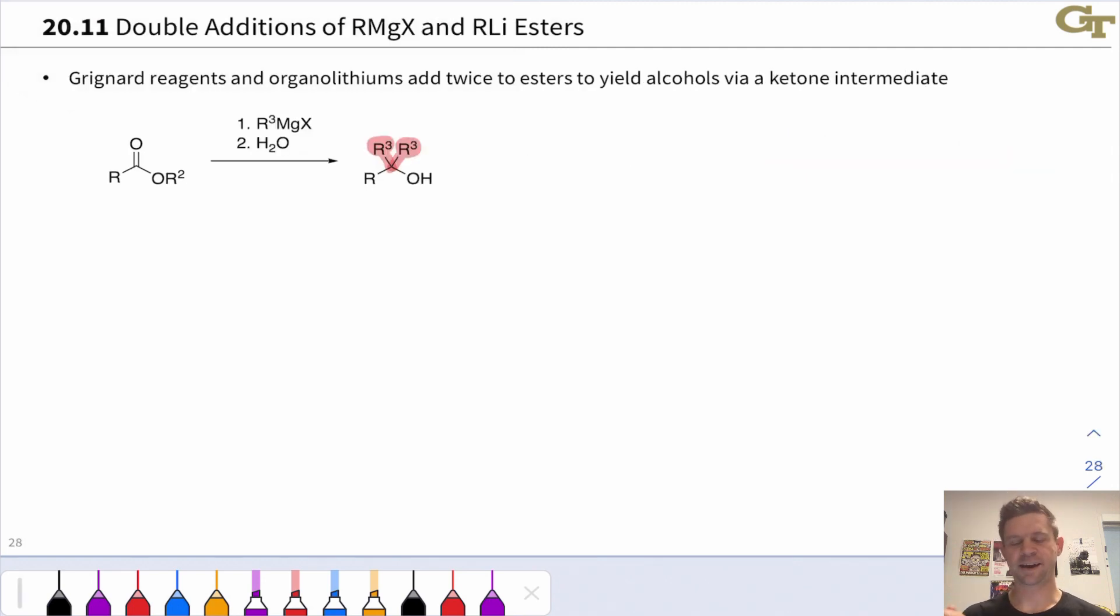Like acyl chlorides and anhydrides, esters react with Grignard reagents and organolithium reagents twice. Two equivalents of the organometallic react to yield alcohols, tertiary alcohols containing two copies of the same group. This reaction occurs via a ketone intermediate, so here I want to look at the mechanism in detail to clarify where this ketone intermediate comes in and to show us that this is really just an instance of nucleophilic acyl substitution followed by a nucleophilic addition of an organometallic to a ketone, a process we've already seen.